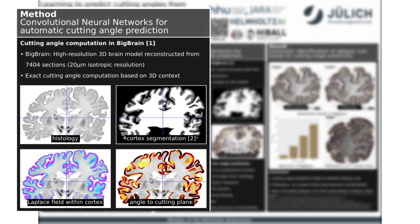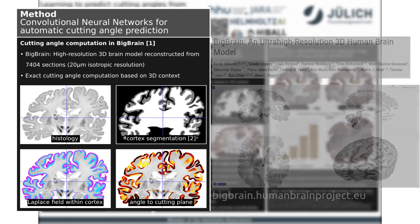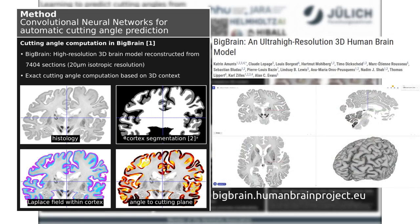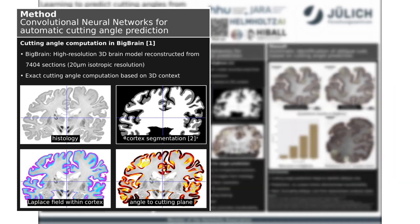For our approach we train a convolutional neural network model to predict the cutting angle given a piece of tissue. To generate training data we use the BigBrain, a high resolution 3D model of the human brain reconstructed from over 7000 histological sections. The 3D context available for the BigBrain model enables us to compute the cutting angle for each voxel within the cortex.